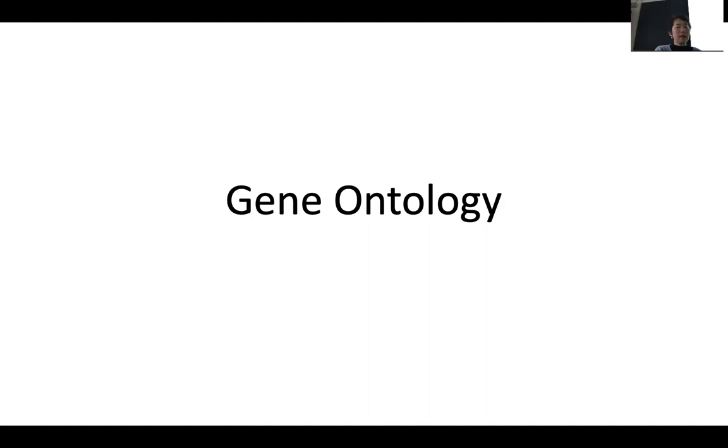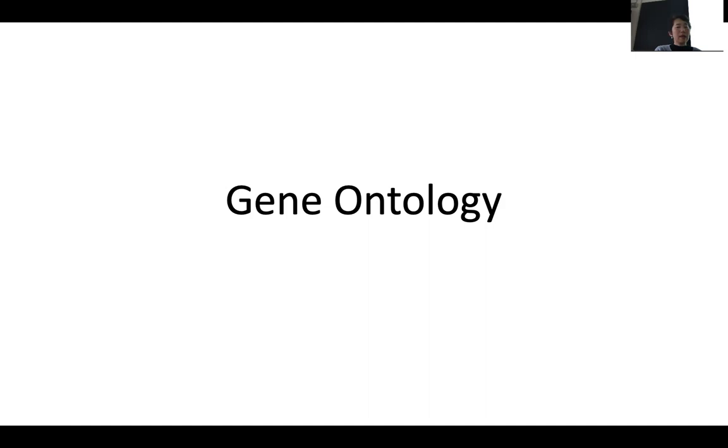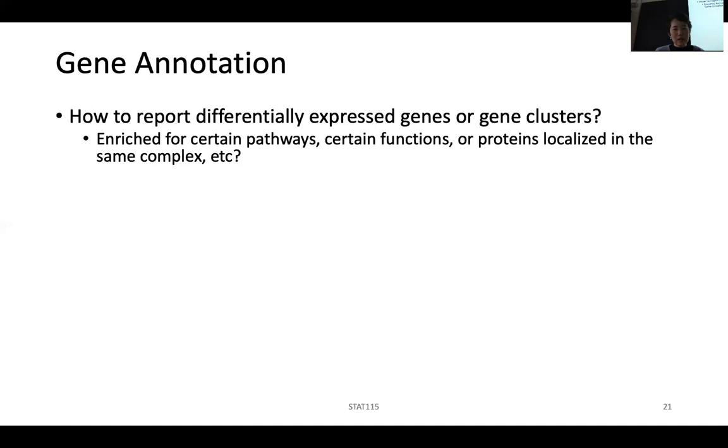People want to say something about those genes. Do they have certain functions? Are they enriched in some pathways or something like that? How do you report the differentially expressed genes or a group of genes? Are they enriching pathways? Are they enriching some functions? Are those genes or proteins localized into some complex? Are they all in the nucleus? Are they all enriched in something? And so that means you need to give a gene some kind of annotation.